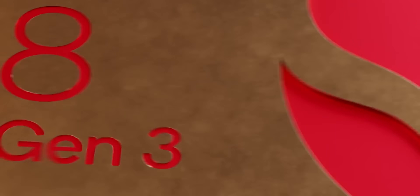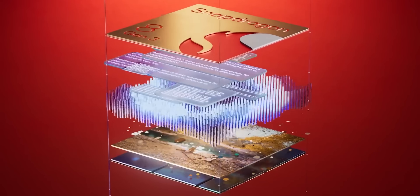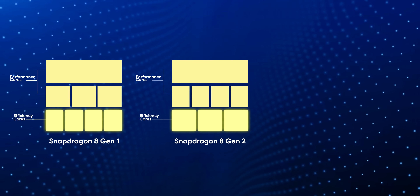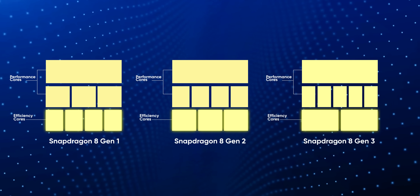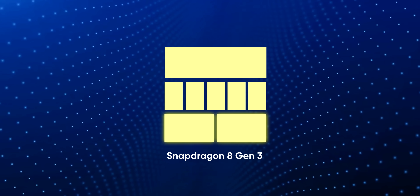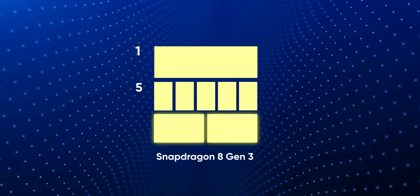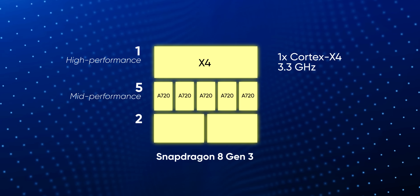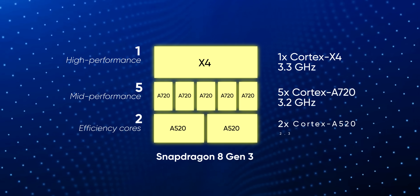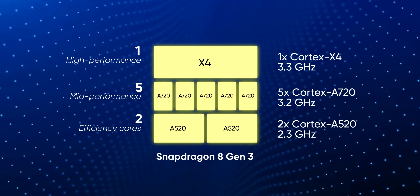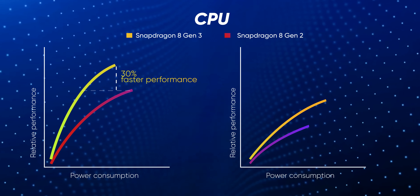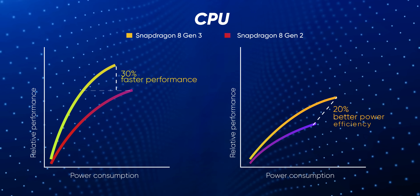Let's start with the Snapdragon 8 Gen 3, where Qualcomm has once again dropped efficiency cores in its flagship mobile processor. The 8 Gen 1 had four of them, compared to three on the 8 Gen 2, and this one only brings two efficiency cores. This means the Snapdragon 8 Gen 3 now has a 1+5+2 CPU cluster, which includes one high-performance Cortex-X4, five mid-performance Cortex-A720, and two Cortex-A520 efficiency cores. Qualcomm says you can expect 30% faster CPU performance and 20% better power efficiency.